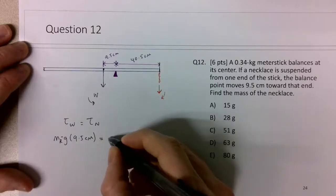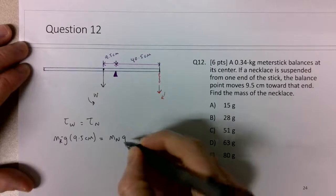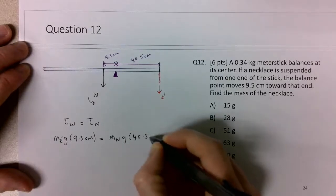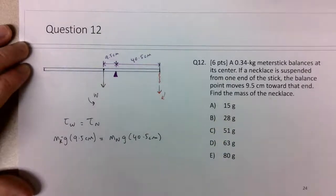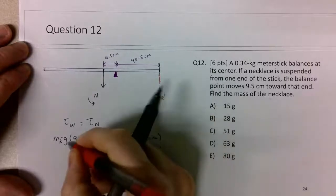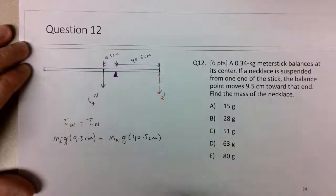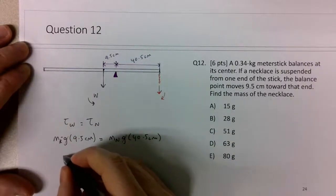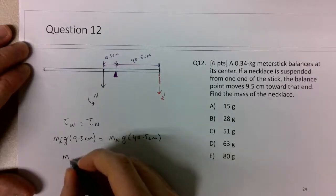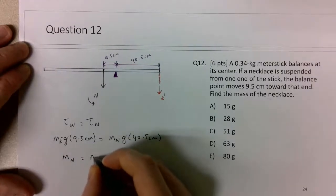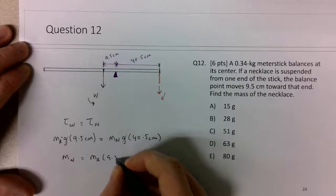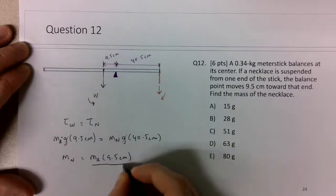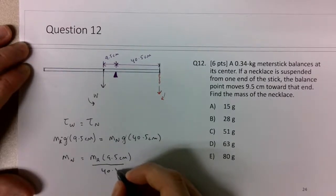And then this is equal to the mass of the necklaces torque. It will be the mass of the necklace times g times 40.5 centimeters. So we'll go ahead and cancel out those g's. So I have enough for the mass of the necklace. So the mass of the necklace equals the mass of the ruler times 9.5 centimeters divided by 40.5 centimeters.